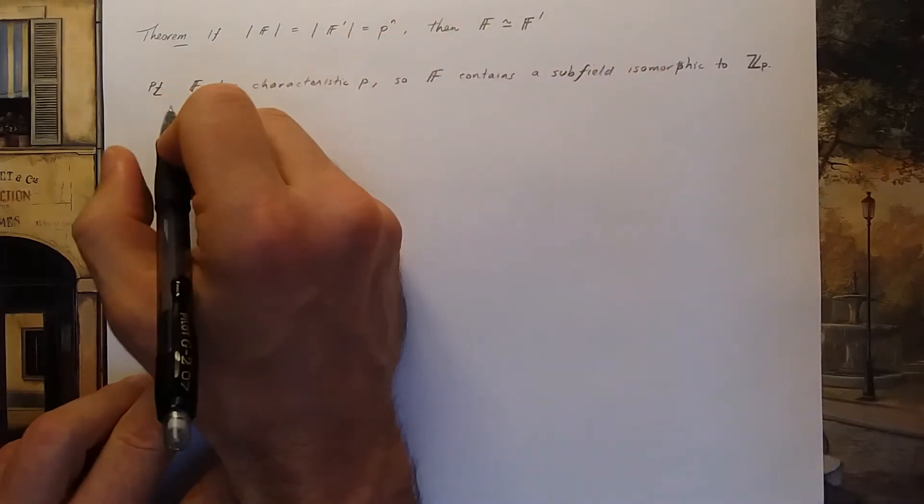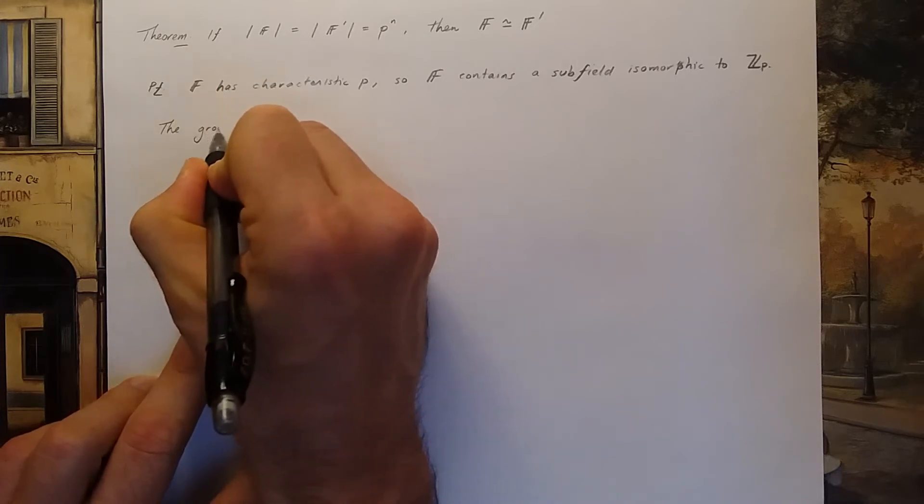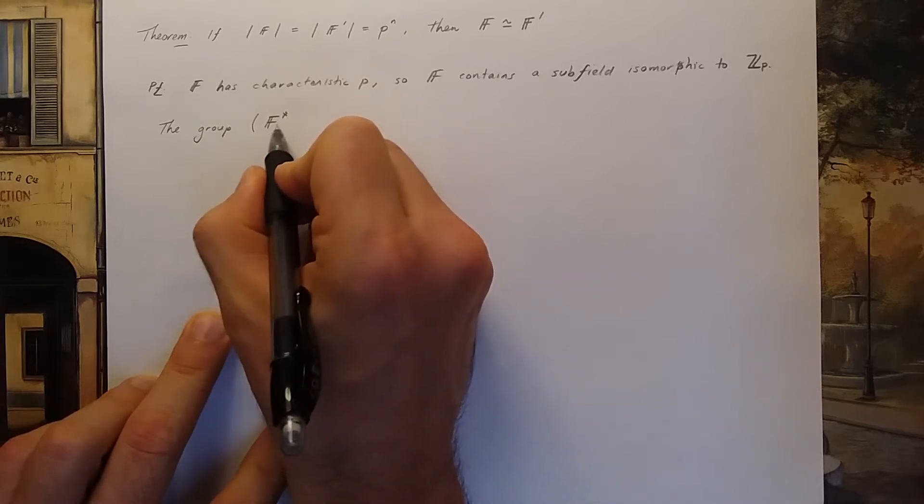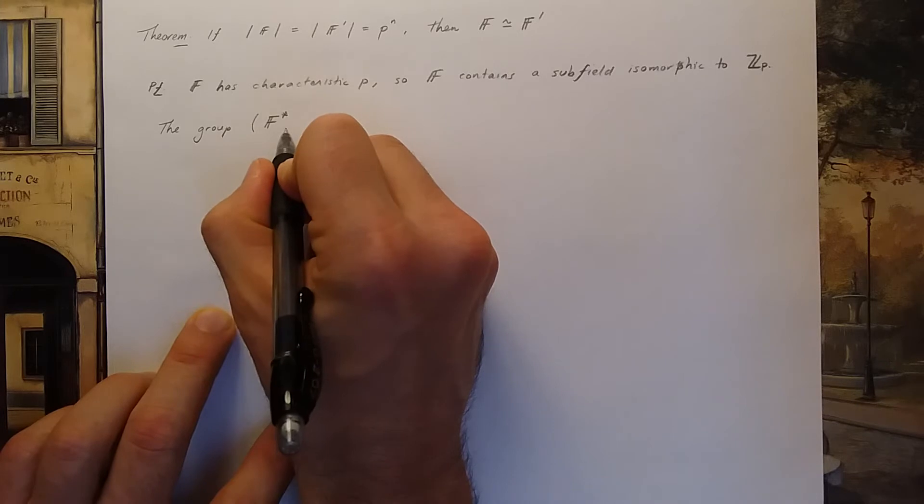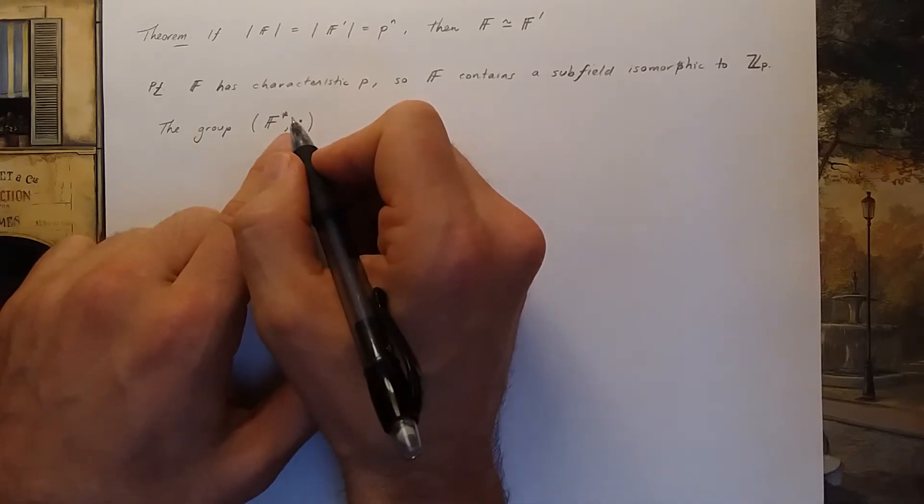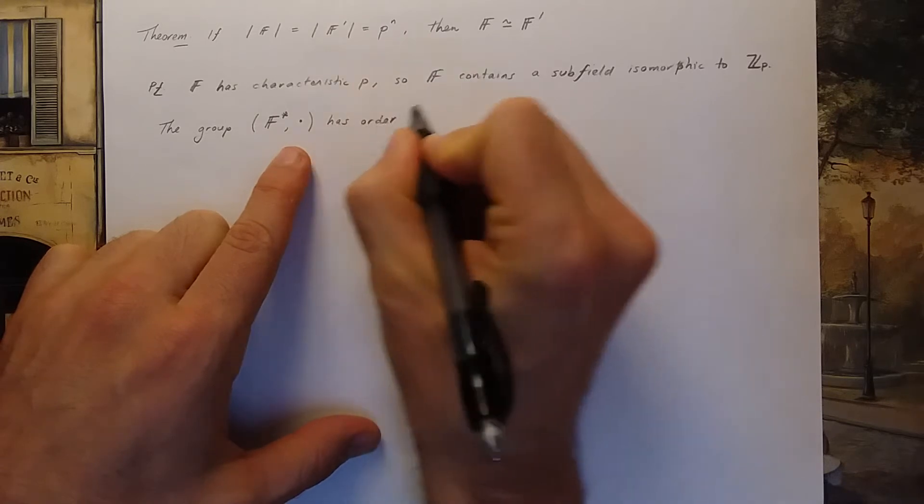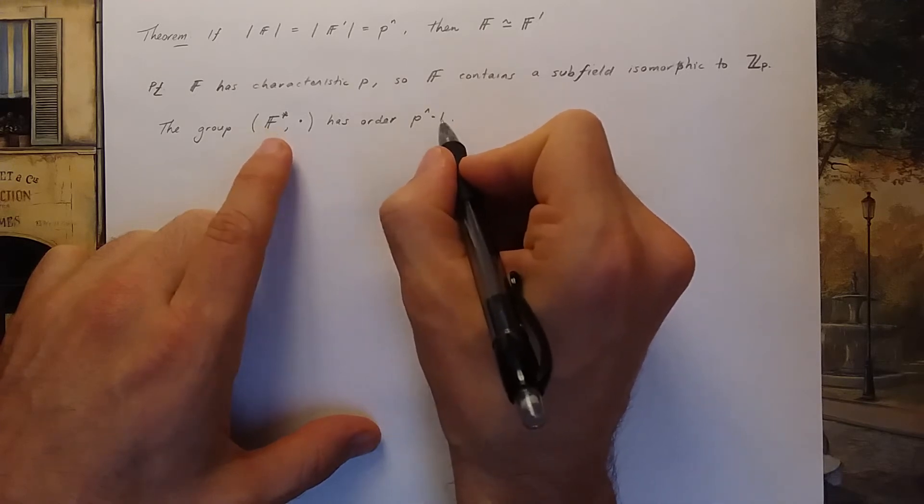Now I'm going to consider the group, not the field, but the group of non-zero elements in F. So this asterisk here will denote the set F but throwing away the element zero. Now I'm going to consider that the group together with the operation of multiplication.